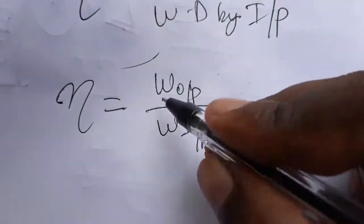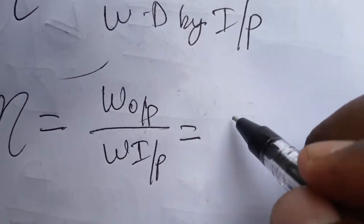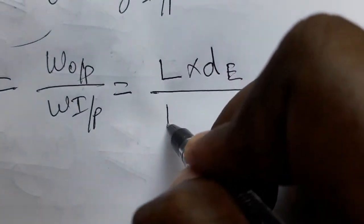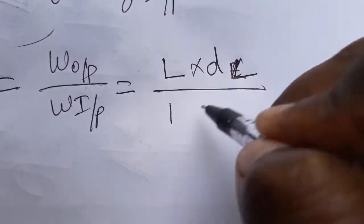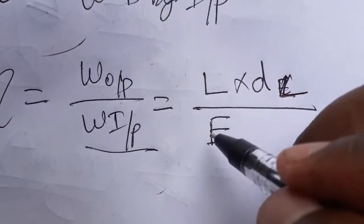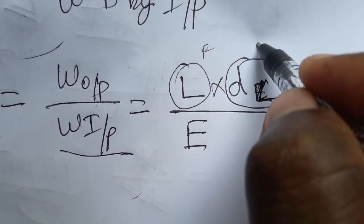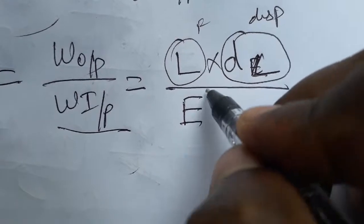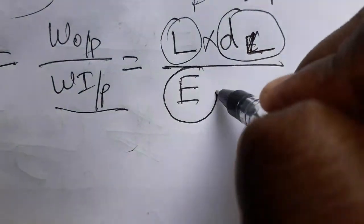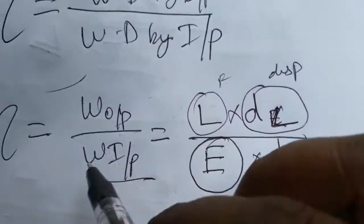Work done output is force into displacement, where the force here is the load, so it is load into displacement of the load. Work done input is effort into displacement of effort, since work done equals force into displacement.